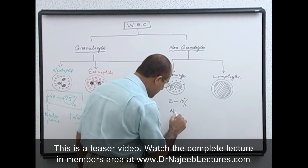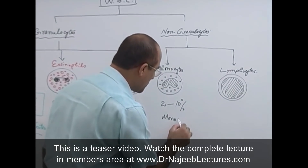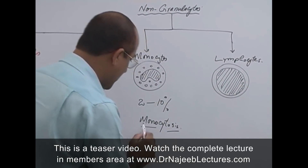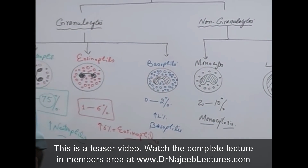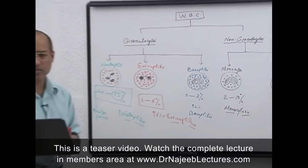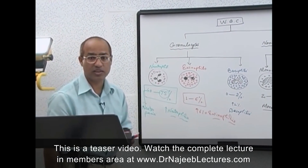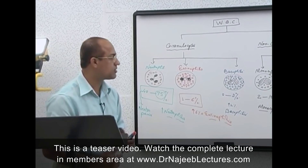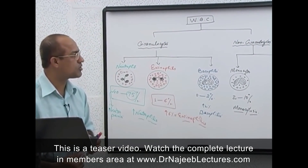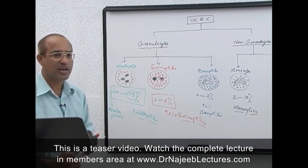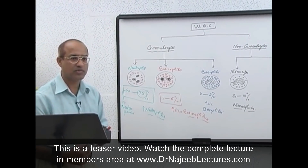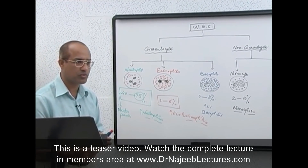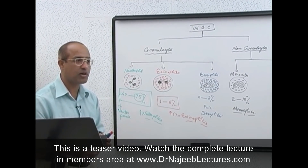If monocytes are more than 10 percent, the condition is called monocytosis. Monocytosis is classically seen in chronic infections — for example, a person suffering from tuberculosis will have monocytosis in the blood.